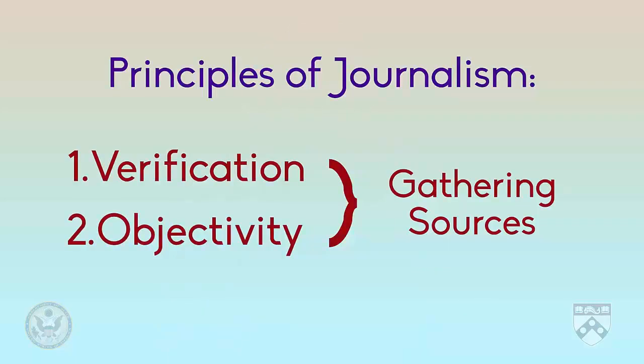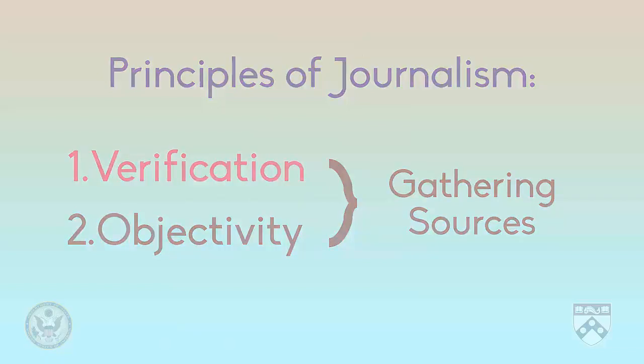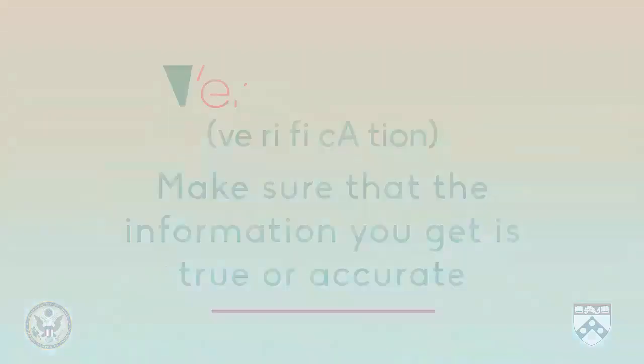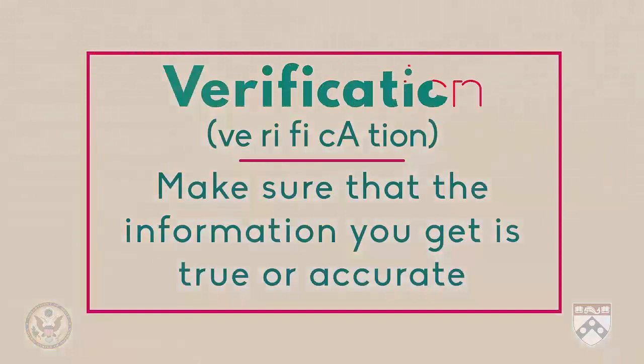So now we know what principles are, and we also know what gathering sources means. Let's talk about some of the important principles that a journalist needs to remember when they are gathering sources: verification and objectivity. The first important principle is called verification. This is when journalists make sure that the information they get is accurate or true.